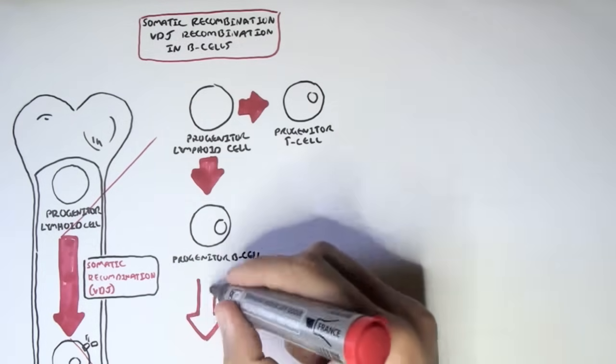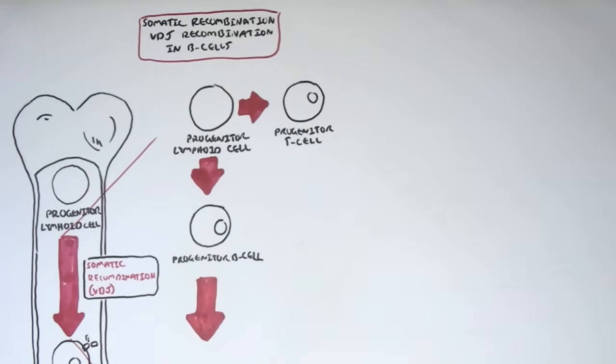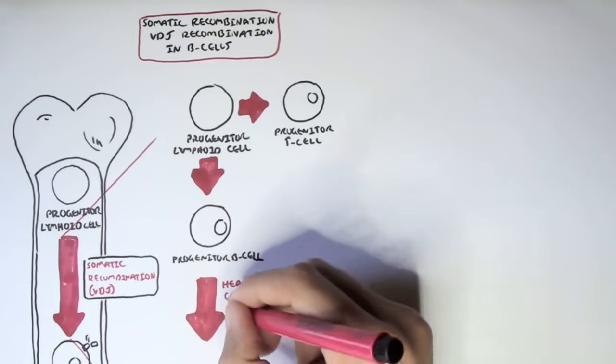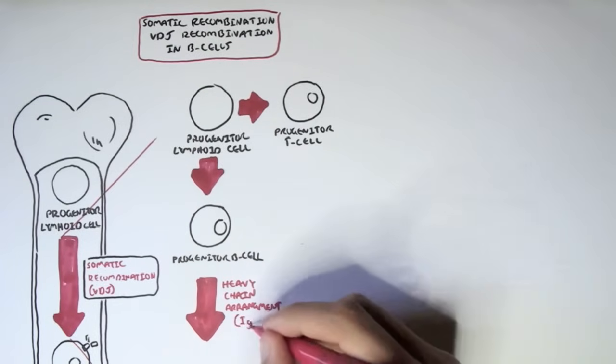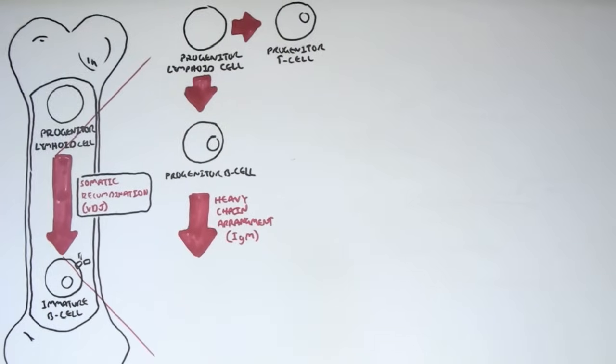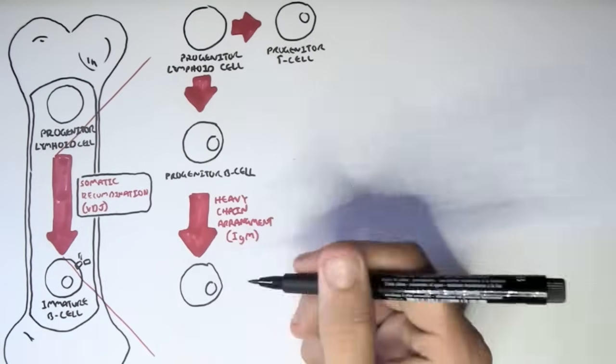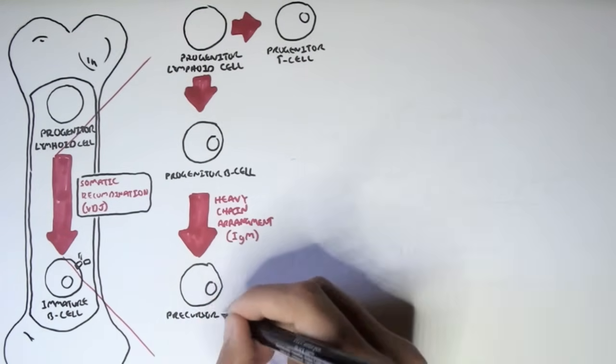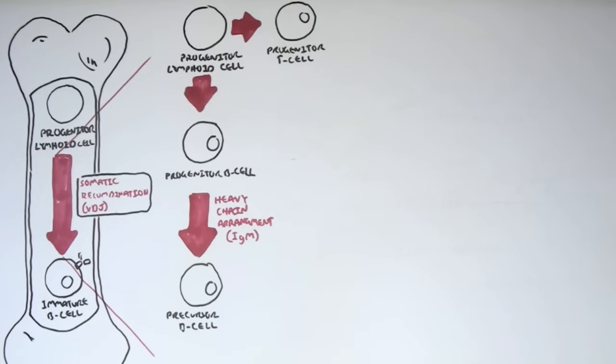And once it becomes a progenitor B cell, it will go through somatic recombination of the heavy chain. So there's heavy chain rearrangement. Typically, the progenitor B cell will make an immunoglobulin M antibody.